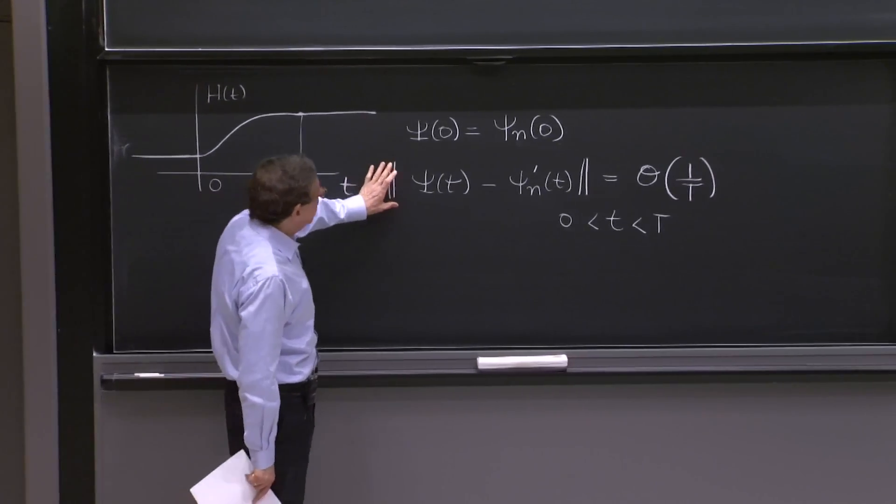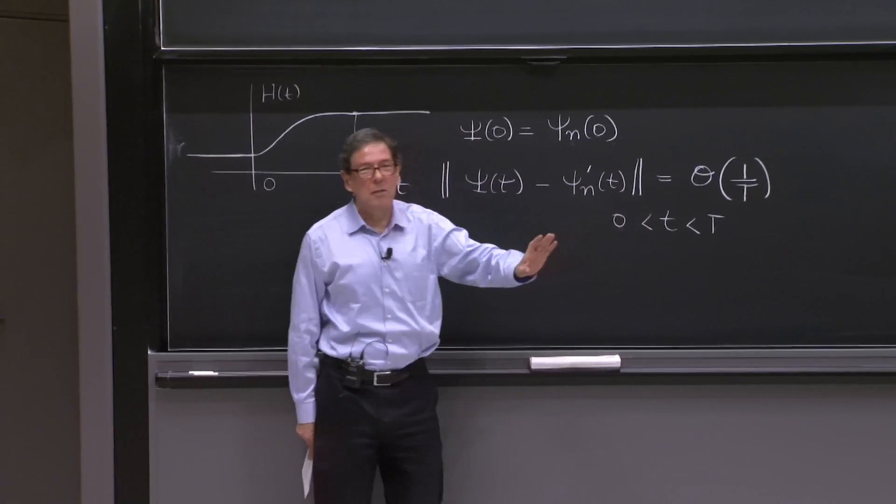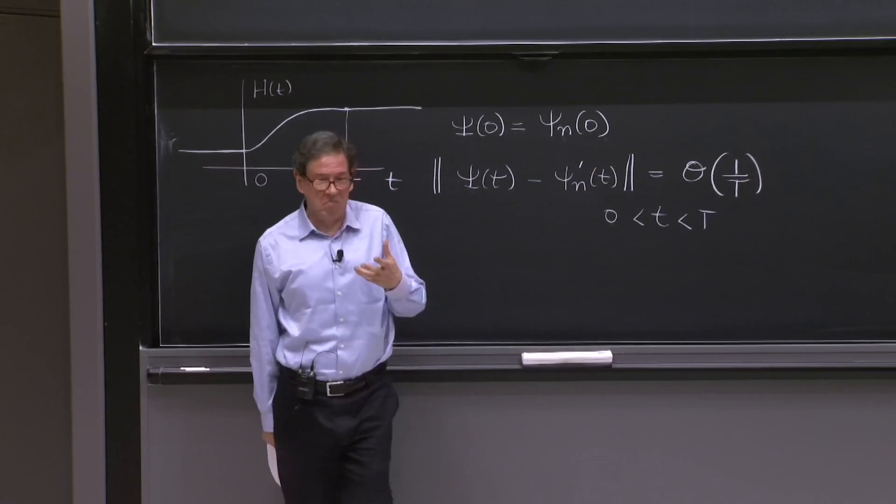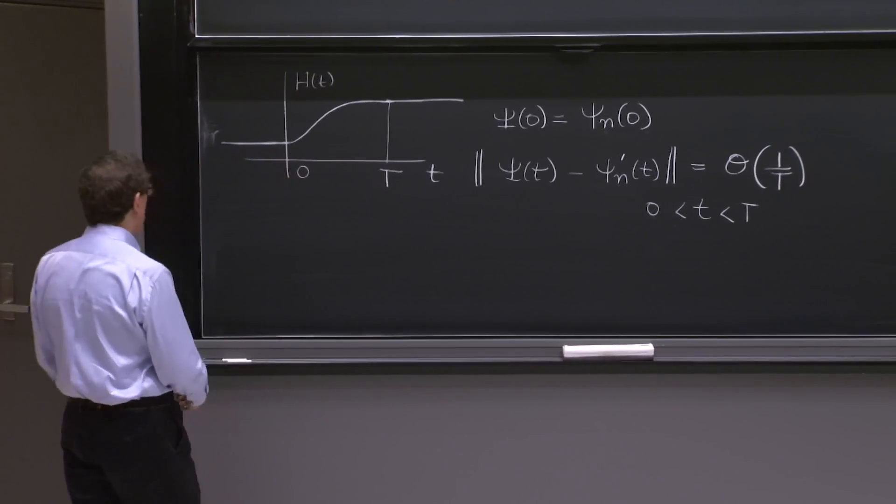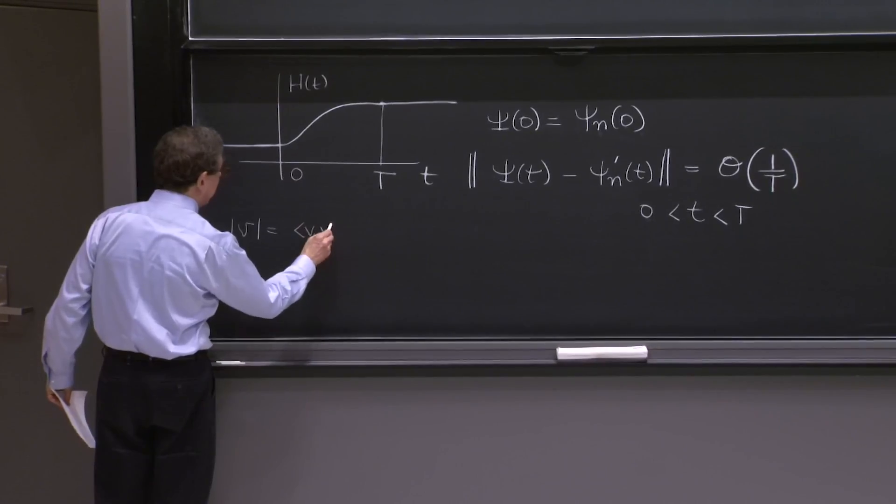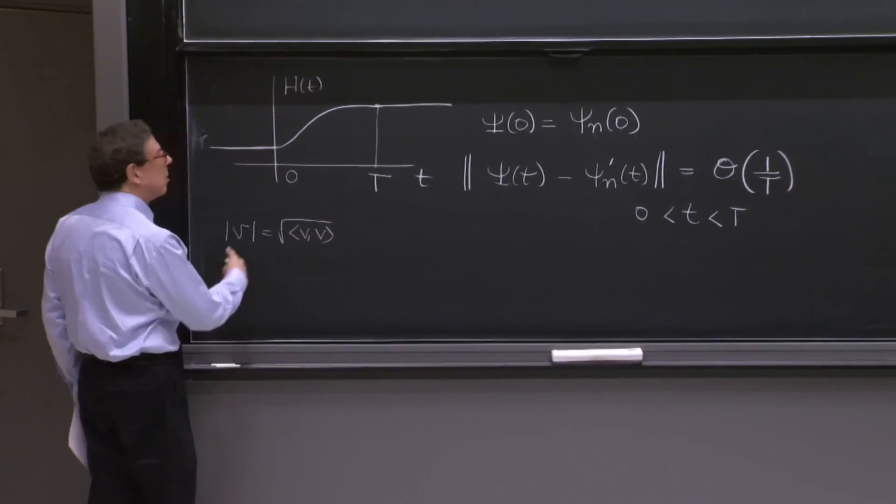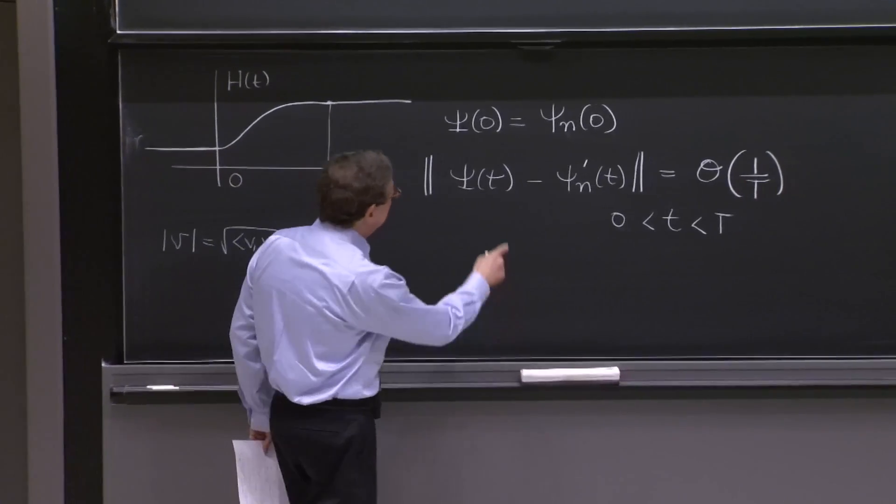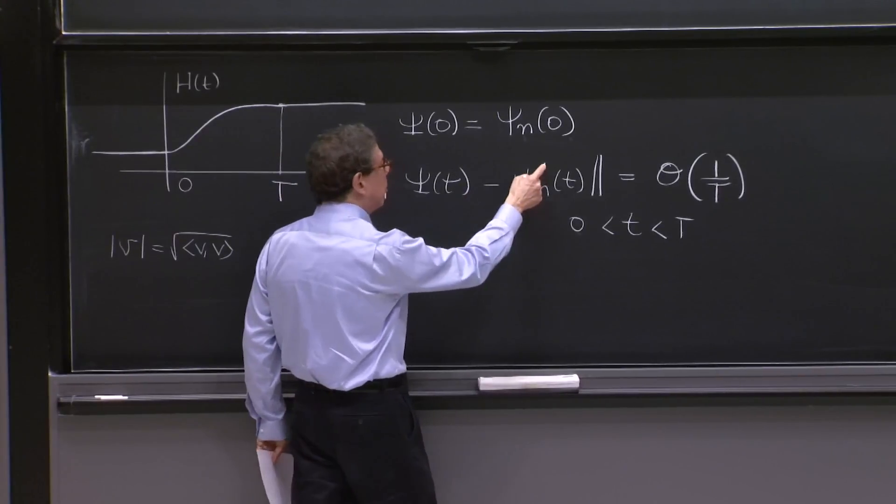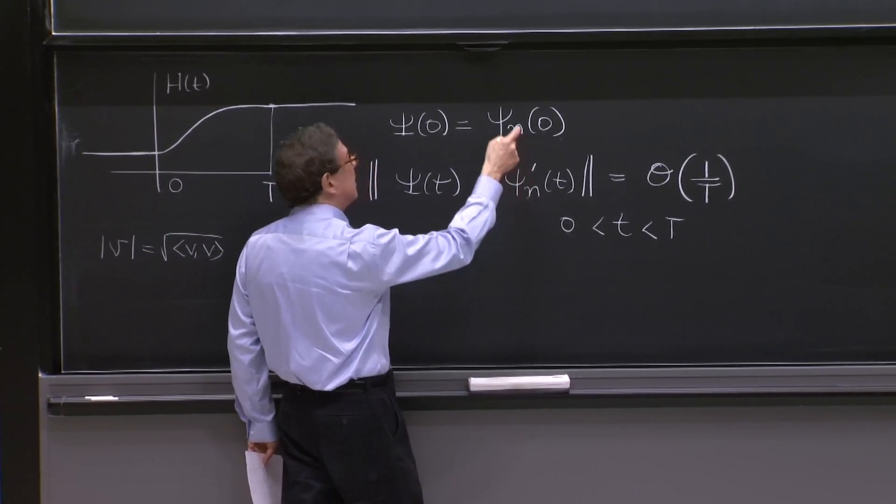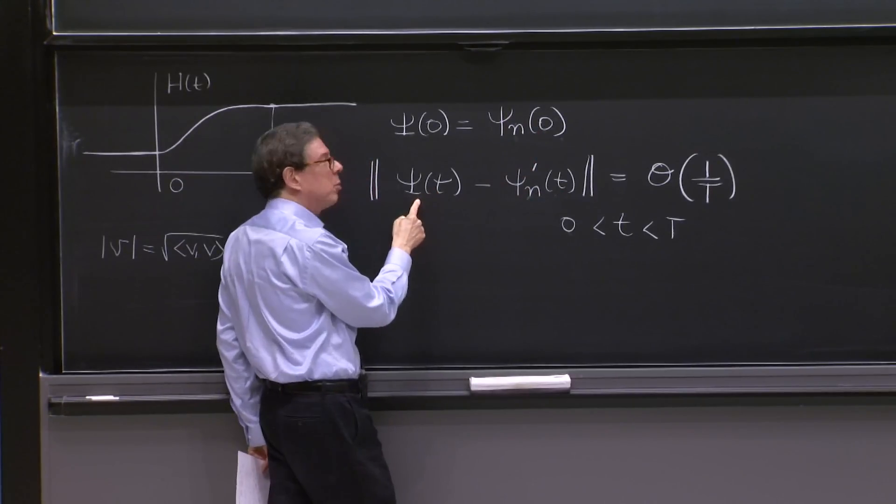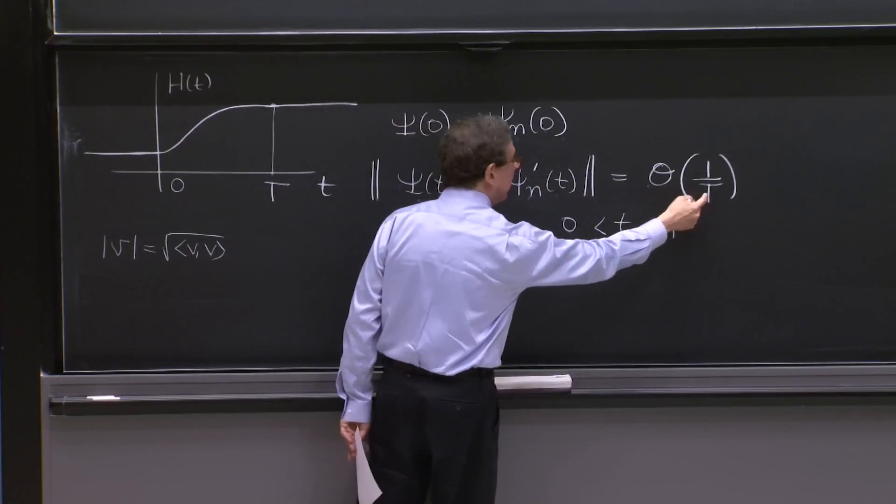And let me remind you, the norm of a wave function is you integrate the wave function square and take the square root. It's sort of the usual definition of the norm of a vector is the inner product of the vector with itself square root. So that's the norm of a wave function. And here, what this means is that with some suitable choice of phase,